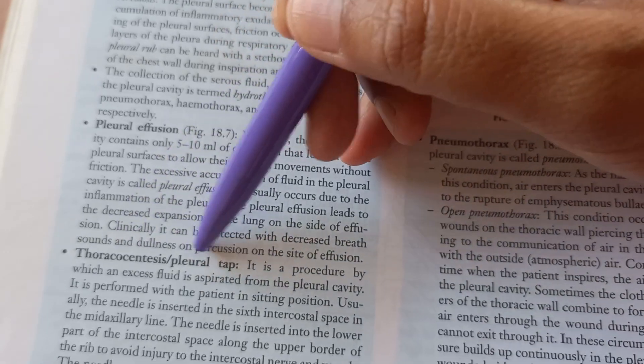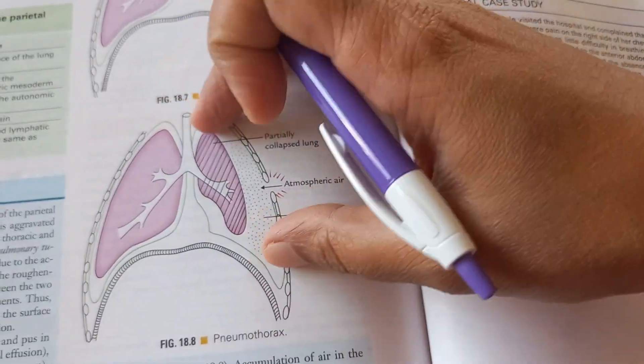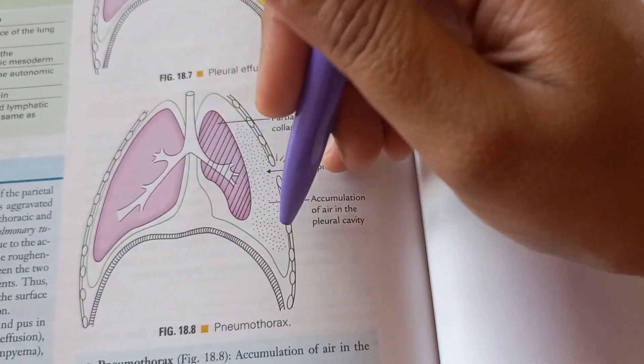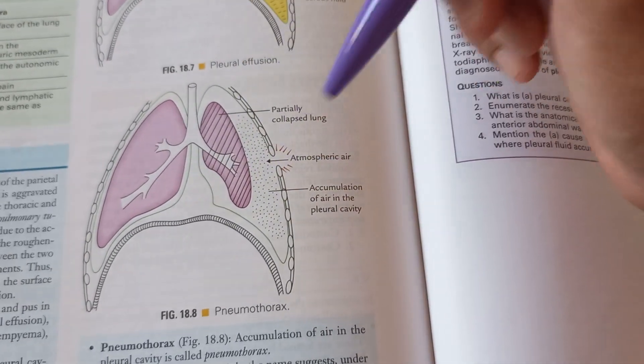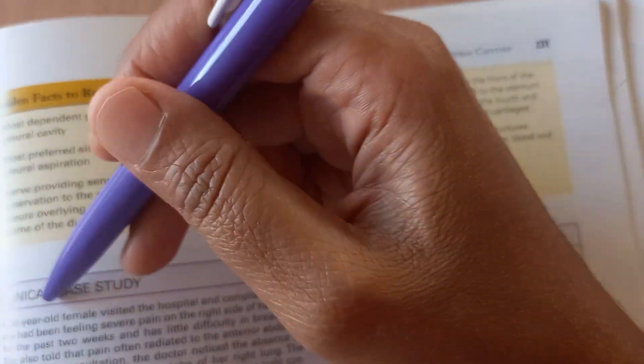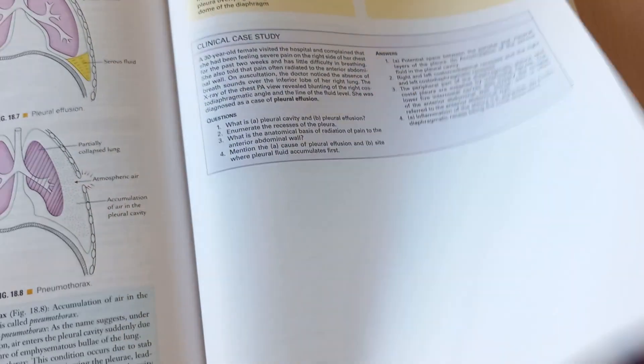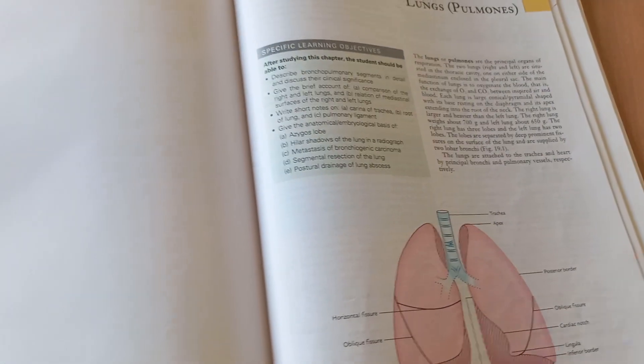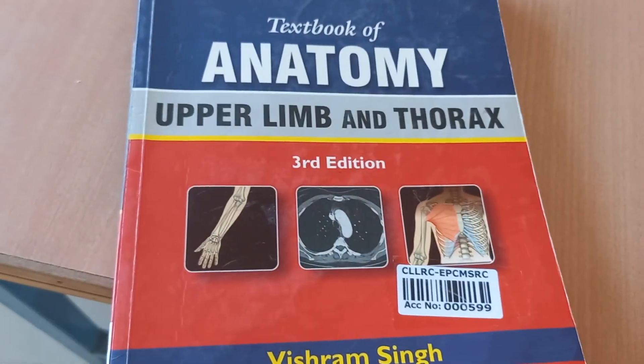Then coming to this one, how do you do a pleural tap? And the diagrams also have shown here. What is this here? You see a pneumothorax. It has collapsed. The lung has collapsed because there is air surrounding the lung in the pleural cavity. You already know at the end of every chapter, there is this golden facts to remember and clinical case study. There is no MCQ, but there is clinical case study in this book.